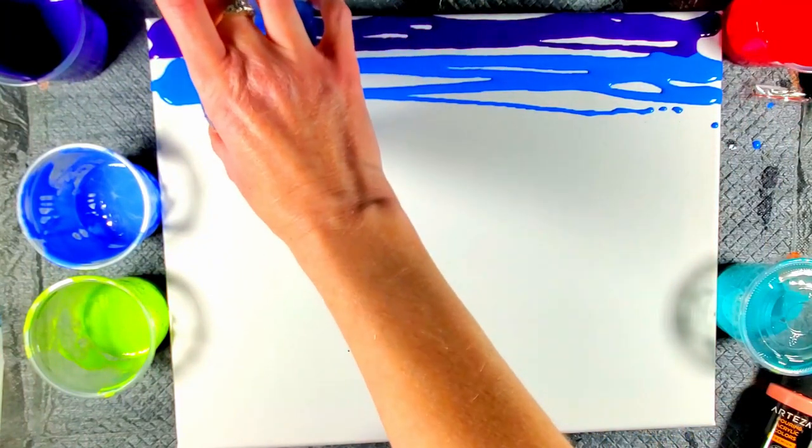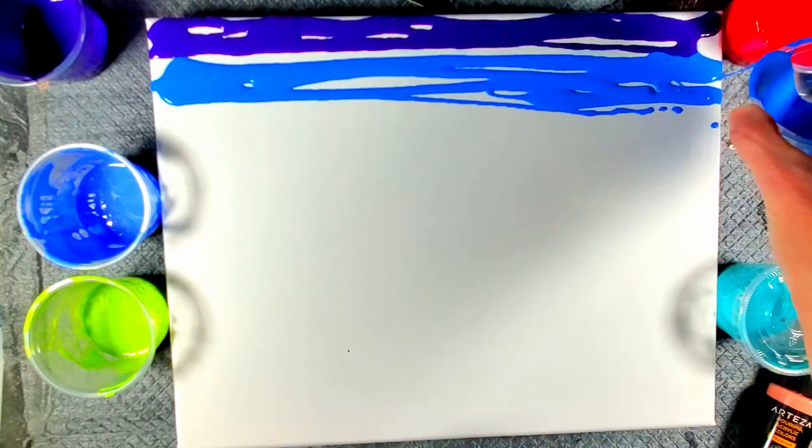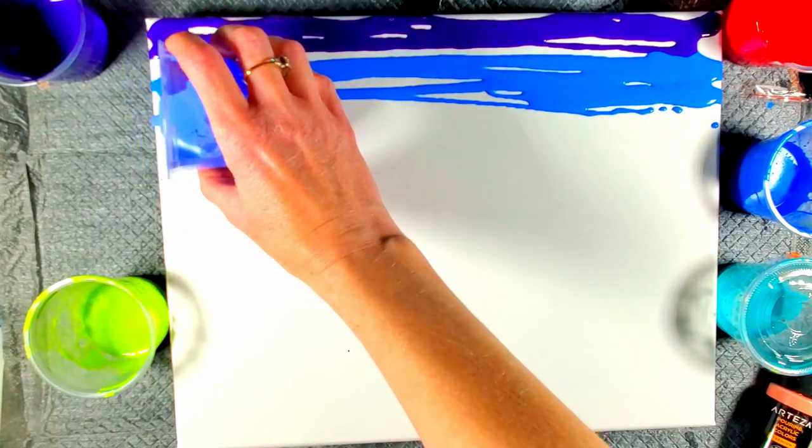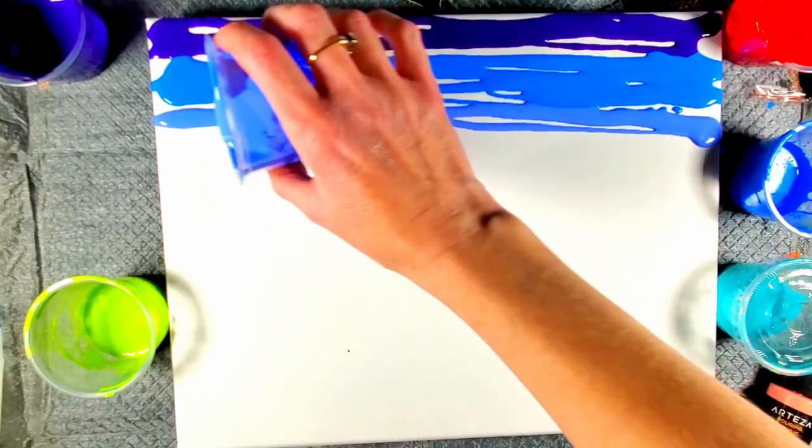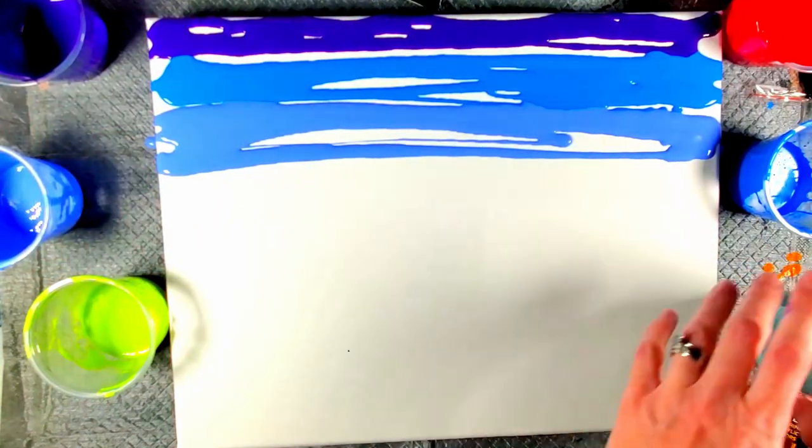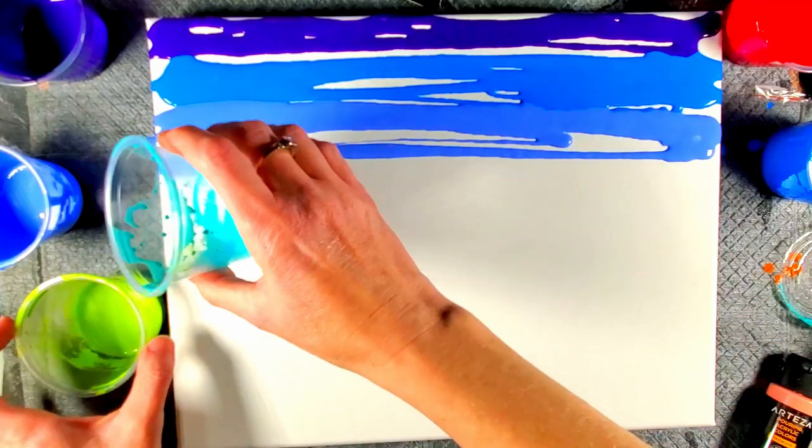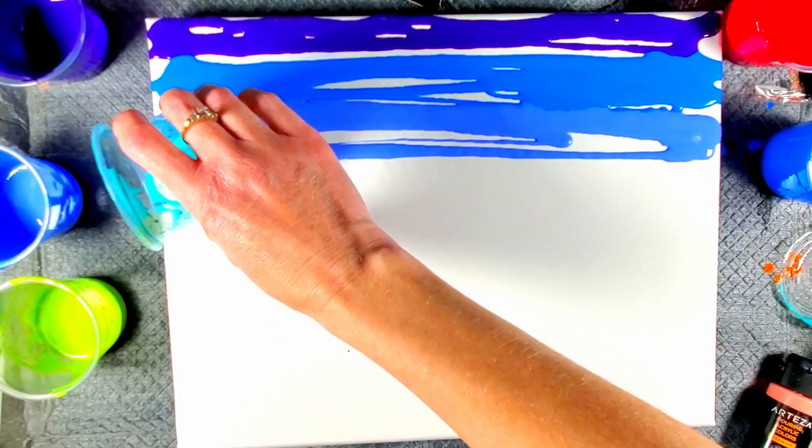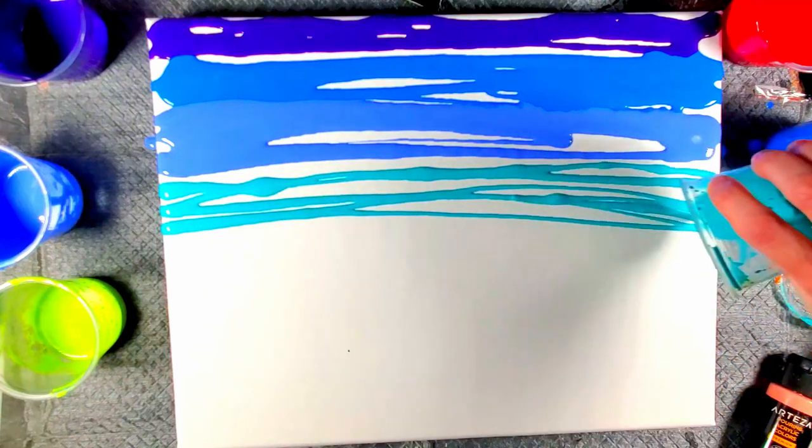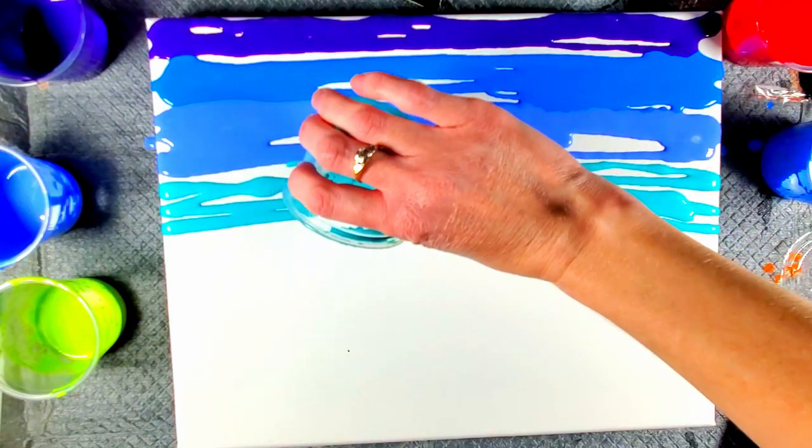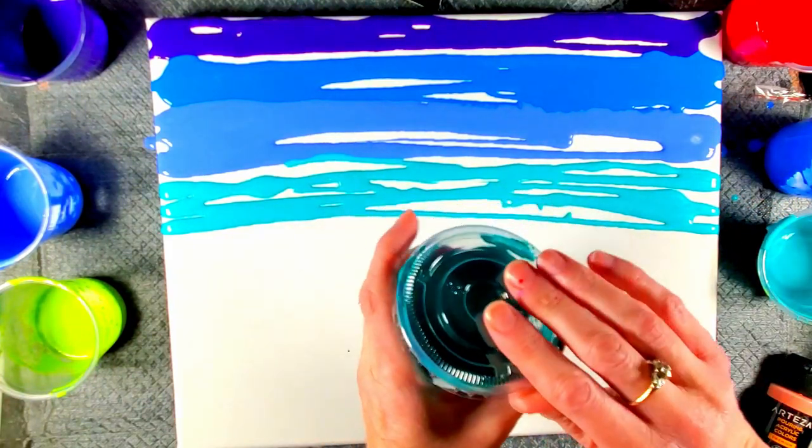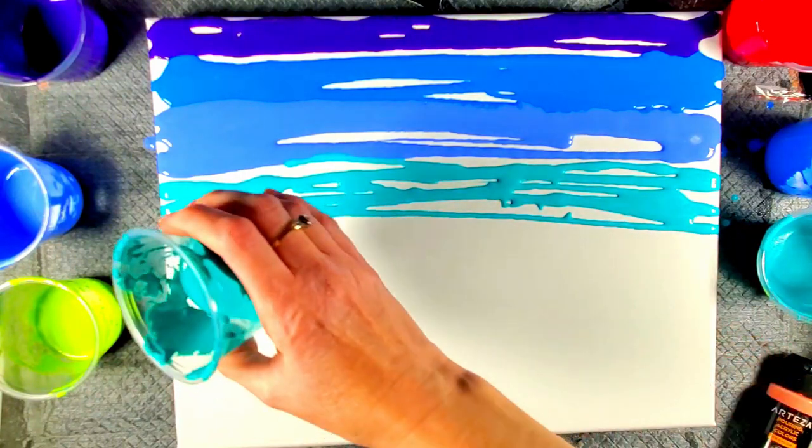Most of these are probably Floetrol. Sometimes lately I've been like flooding the canvas when I do a swipe. It ends up with a lot more paint on the canvas. It's actually not necessary, you don't need a ton. I wish I had more of that teal. I wonder if I have another teal. It's more green, let me see. I like it, it's okay, it'll work.